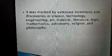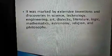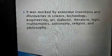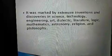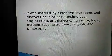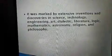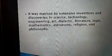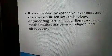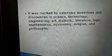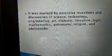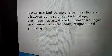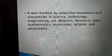Why was the Gupta period or dynasty known as the Golden Age or Golden Era? Because they worked hard in various fields to achieve success and to build a mark. It was marked by extensive inventions and discoveries in science, technology, engineering, art, literature, logic, mathematics, astronomy, religion, and philosophy. In all these fields, they worked hard to achieve success, and that is why that era was known as the Golden Age.